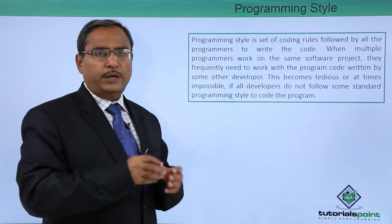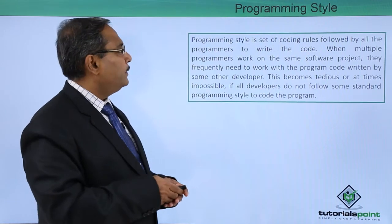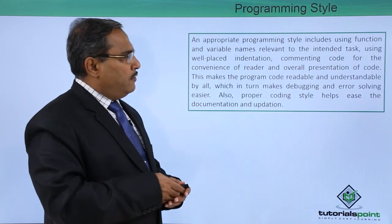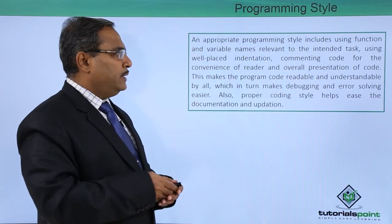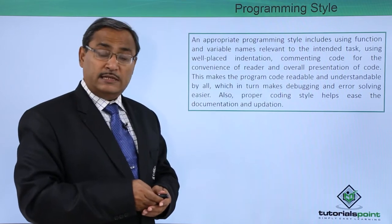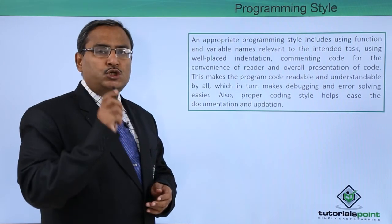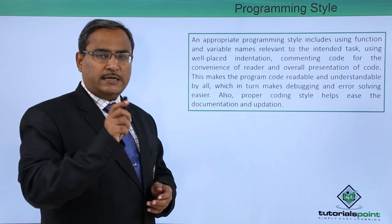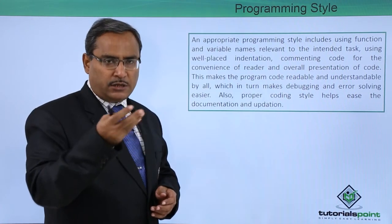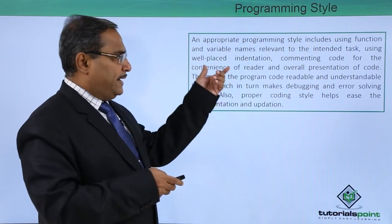The coding style should be universal and uniform. An appropriate programming style includes using function and variable names relevant to the intended task — the nomenclature should reflect the purpose of the function or variable. It also includes well-placed indentation and commenting or remarks for the convenience of the reader and overall presentation of the code.